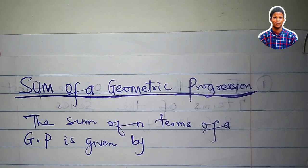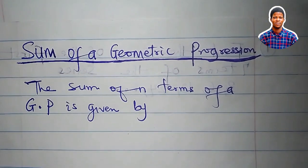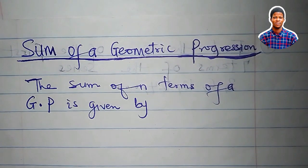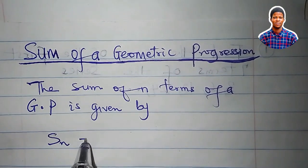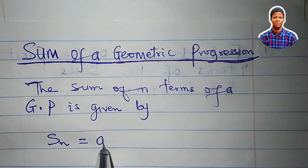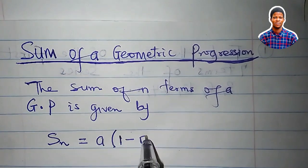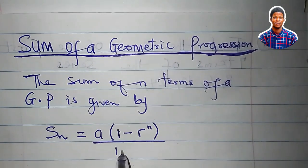Alright, let's talk about the sum of a geometric progression — the sum of the first n terms of a GP. What does the formula say? The sum of n terms of a GP is given by the formula: S_n = a(1 - r^n) / (1 - r), where a is the first term and r is the common ratio.